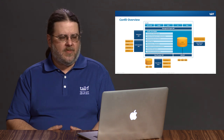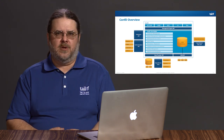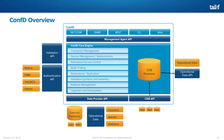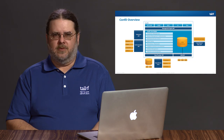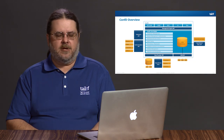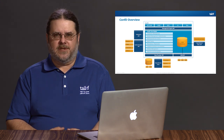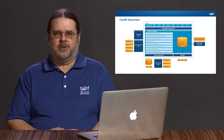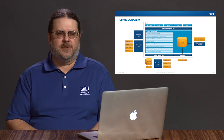Authentication can be done internally by ConfD or it can be done externally. For external authentication, ConfD has out-of-the-box integration with Linux PAM (pluggable authentication modules), a standard authentication architecture in Linux. We also provide an external authentication API that you can use to access other types of external authentication. Similarly, for things such as SSH to NetConf or CLI, there are internal SSH servers that can be used with ConfD, or we also provide support for using an external SSH server such as OpenSSH.